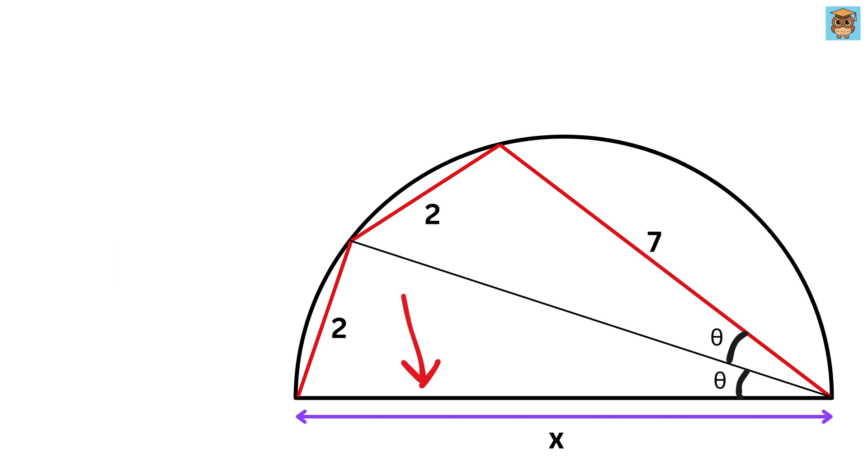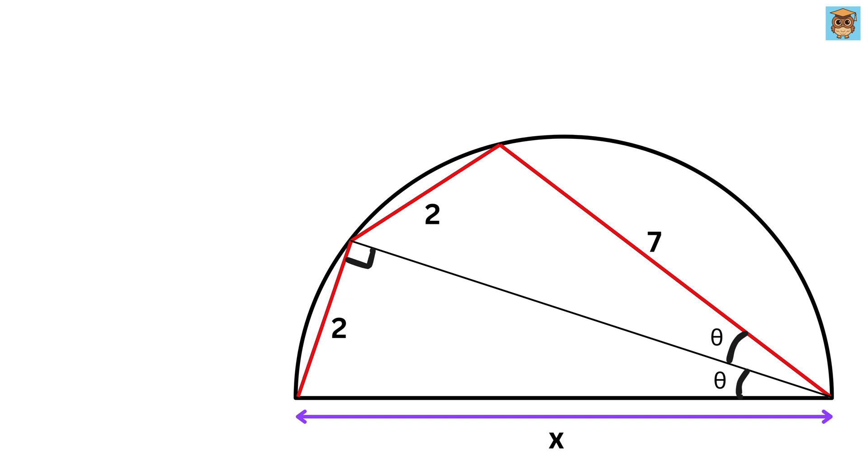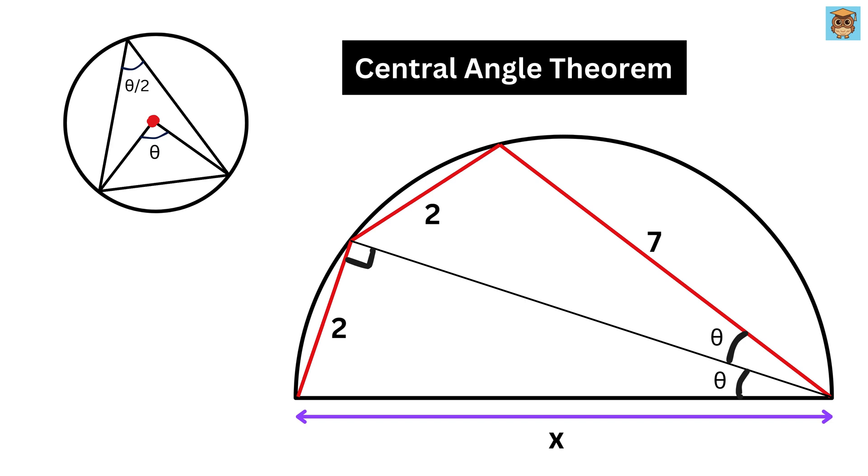Now this is the diameter of this semicircle, so what will be the measure of this angle? We can use Thales' theorem, which will give us this angle as 90 degrees. This can also be seen using the central angle theorem, because if this diameter acts as a chord, then this center angle will be 180 degrees, and thus this angle will be half of it, or 90 degrees.